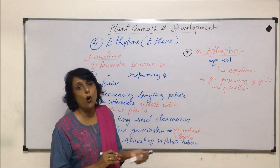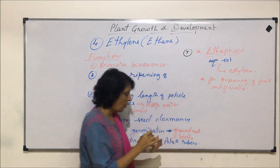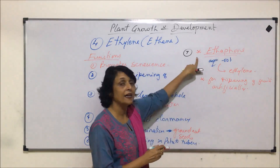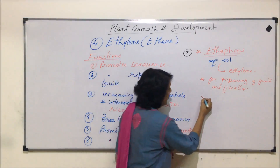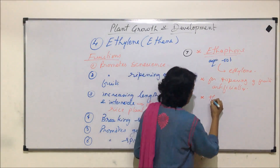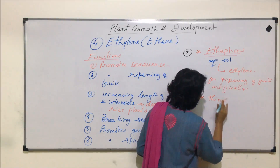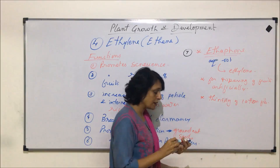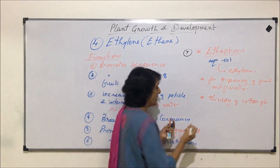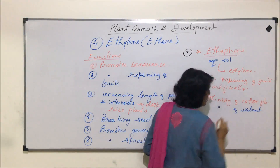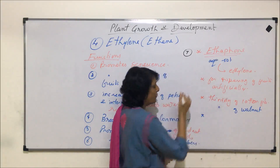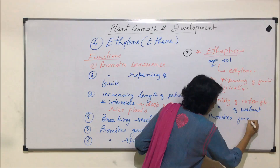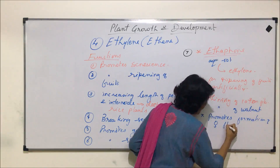Ethephon treatment has some additional effects on plants. It causes thinning of cotton fibers and also thinning of the shell of walnut. Furthermore, it promotes the formation of female flowers in cucumber.